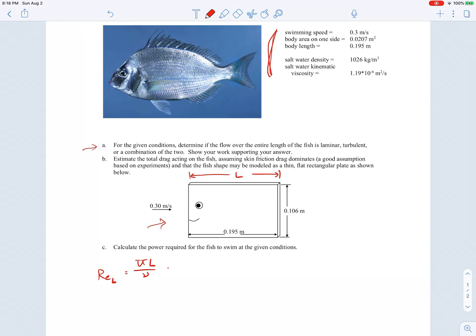If we plug in the numbers, 0.3 meters per second for the velocity, the length of the fish is 0.195 meters, and we're told that the viscosity for saltwater is 1.19 times 10 to the minus 6 square meters per second.